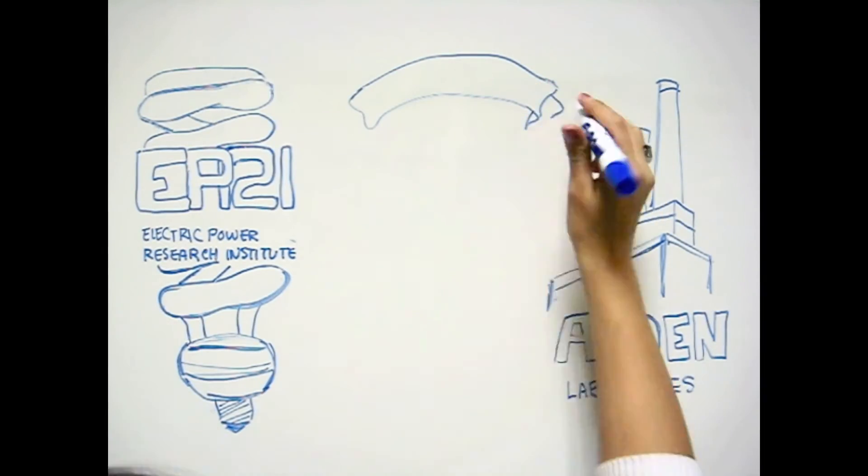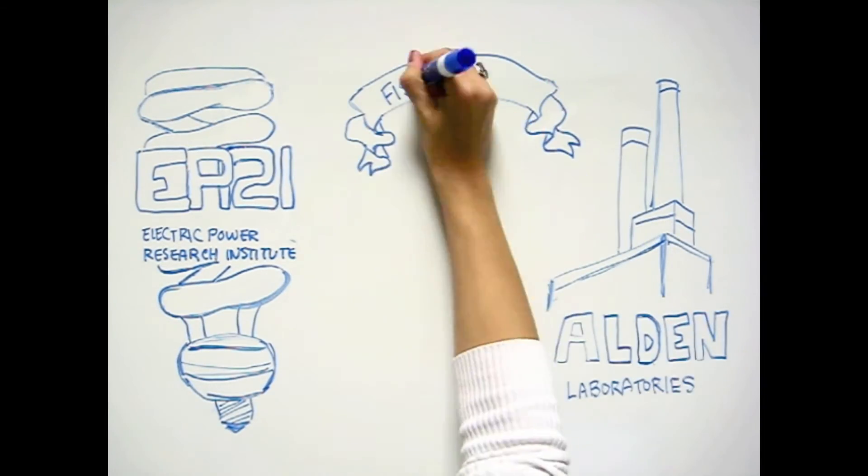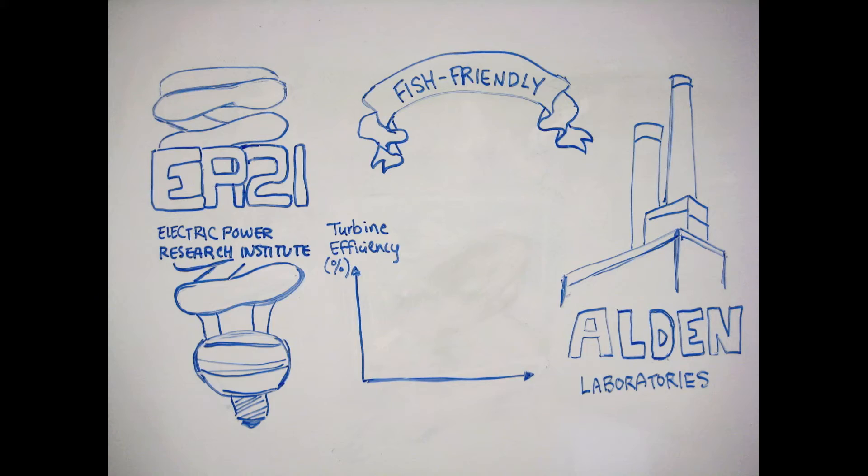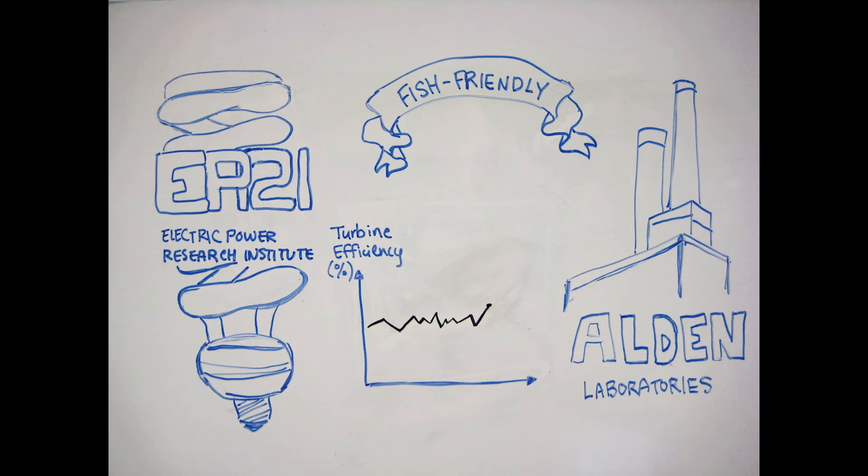These turbines exceeded expectations. Overall fish survival rates reached above 98%, a significant increase from the 80% survival rates from a traditional turbine. Additionally, no power efficiency was compromised. It converted 94% of the water's energy into usable electricity, even more efficient than some traditional turbines.